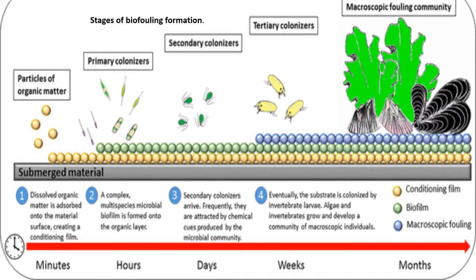Stages of biofouling formation: First, within a minute, dissolved organic matter is absorbed onto the material surface, creating a conditioning film. Later, an hour later, a complex multi-species microbial biofilm is formed on the organic layer. After a few days, secondary colonizers arrive and are affected by chemicals produced by the microbial community. After a week, the substrate is colonized by invertebrate larvae, and algae and invertebrates grow and develop on a community of macroscopic individuals. After one month, full macroscopic fouling is established.